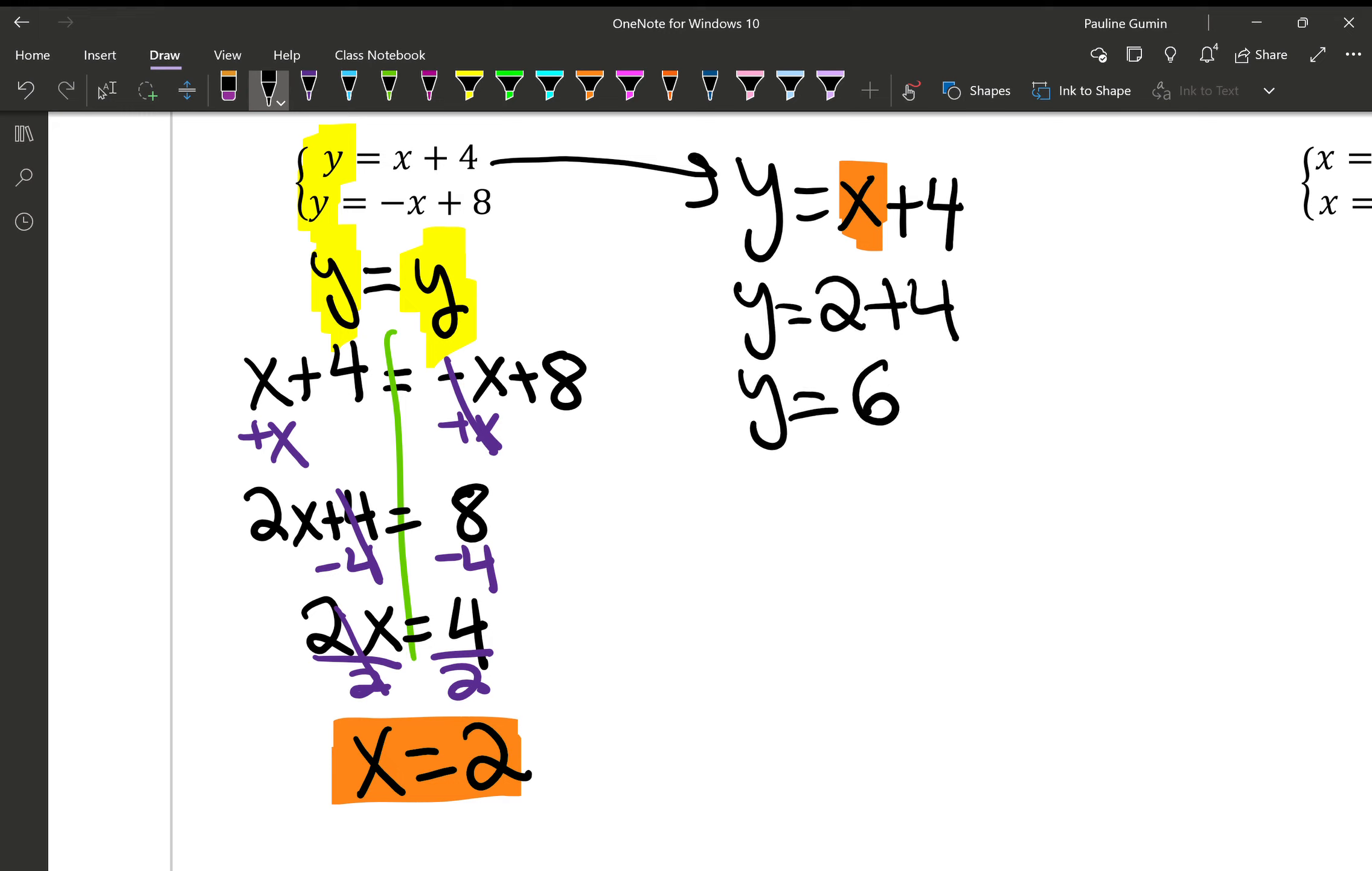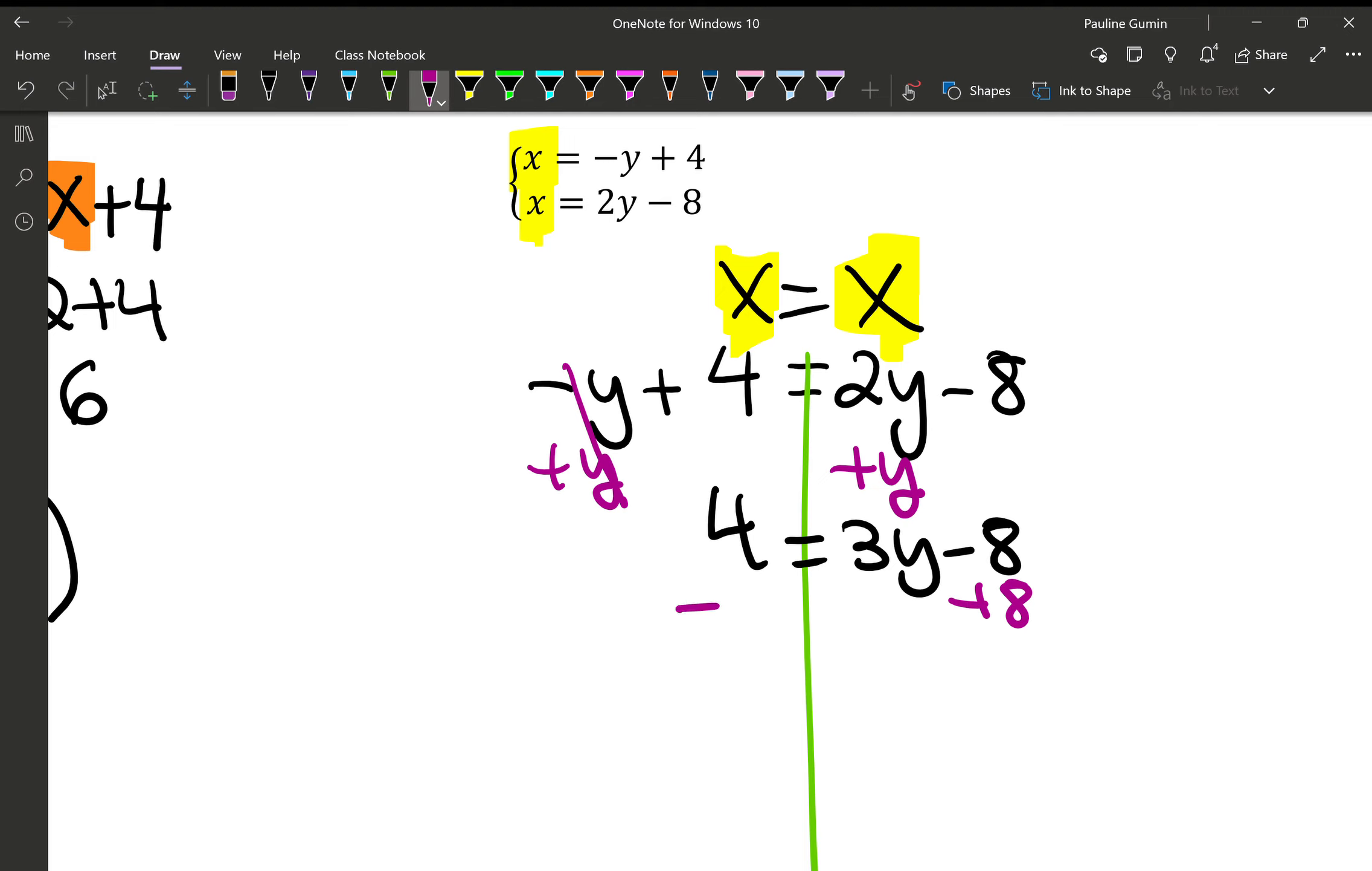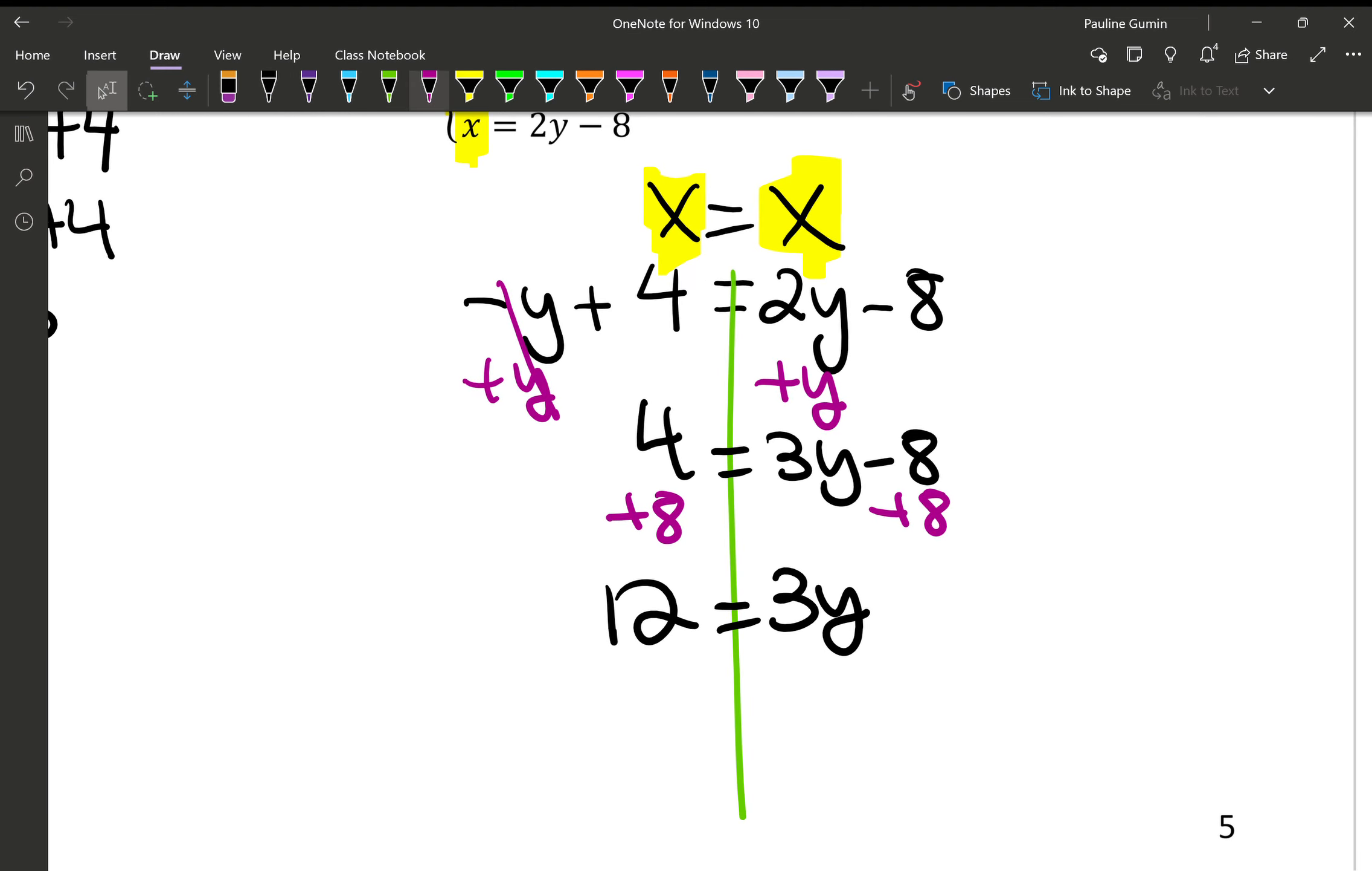Let's try one last one that's similar to that. This time, these are both x equalses. So does x equal x? Sure does. That means we can put the top equation on the left side and the bottom equation on the right side. Let's solve it. The first thing that I feel like doing here is adding y to both sides. So we've got 4 equals 3y minus 8. Then I'm going to add 8 to both sides. So that's 12 equals 3y. And finally, divide both sides by 3.